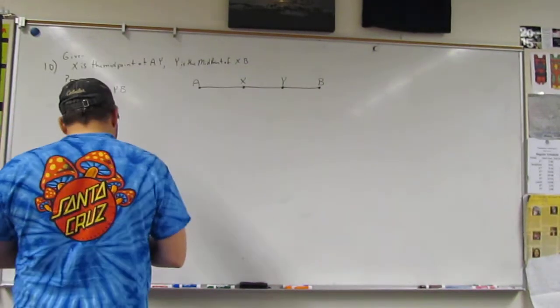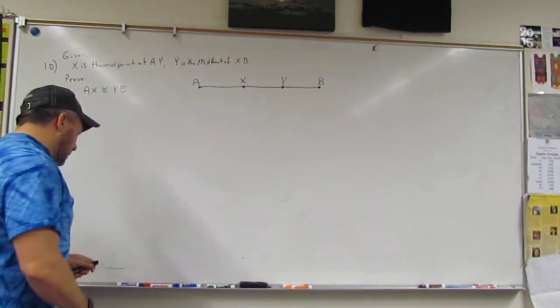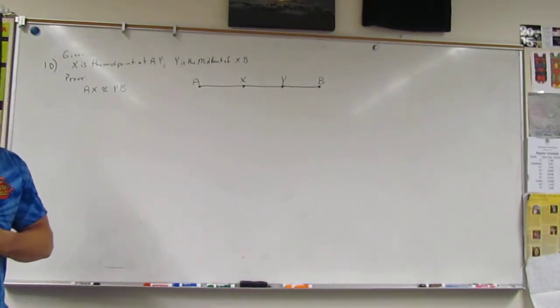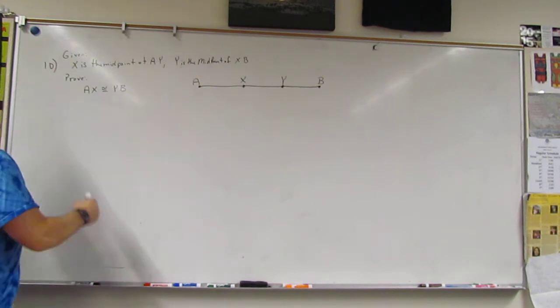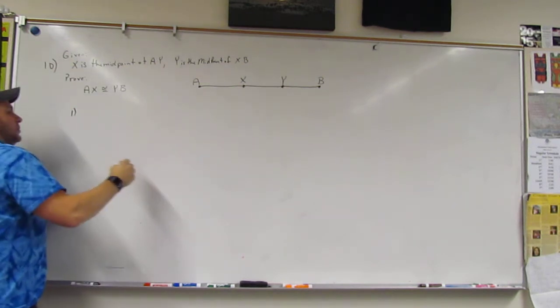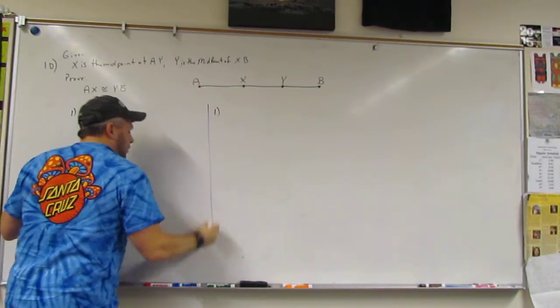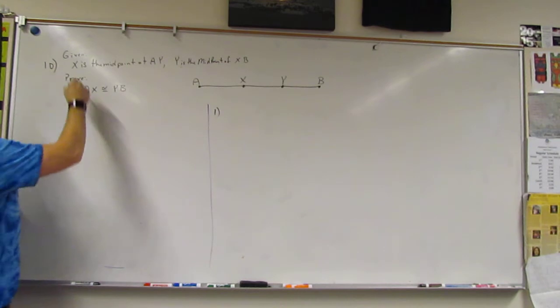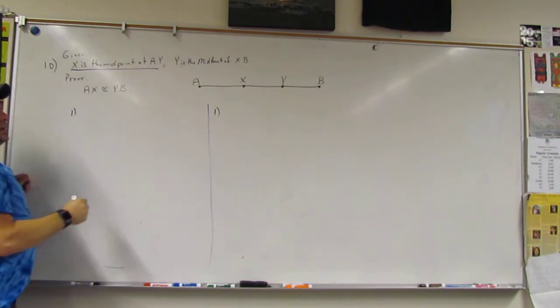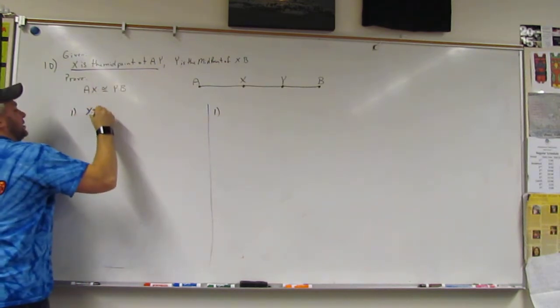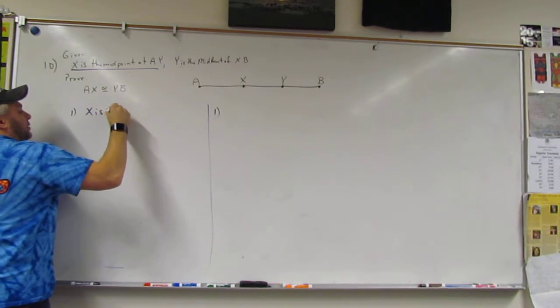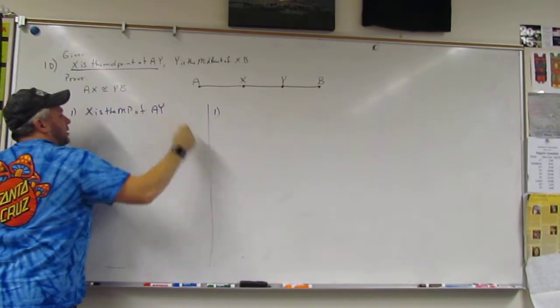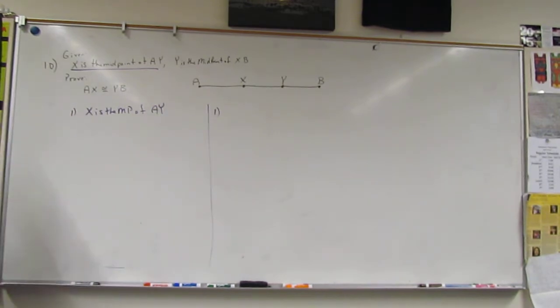All right, so step one to the two column proof is always what? Given. Given. I grab one of the givens and I go with it. X is the midpoint of AY. Given.